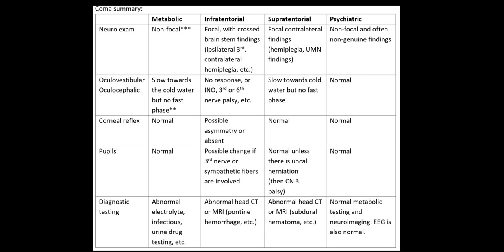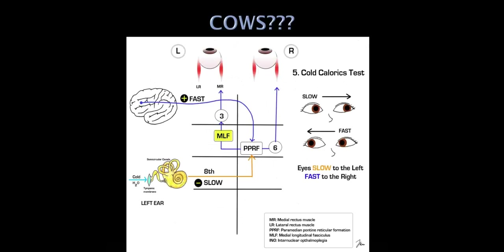In a supratentorial lesion, much like in metabolic coma, the lesion is cortical, so we won't have the fast phase of nystagmus, but the eyes will still go slowly toward the ear that is irrigated. In a psychogenic coma, we'll have normal cold calorics.